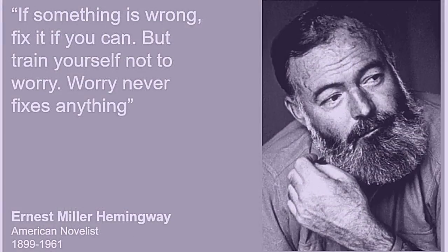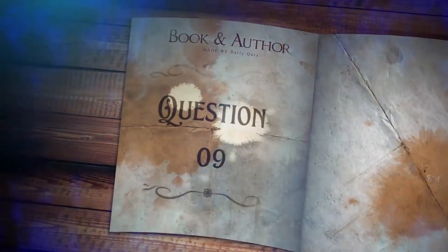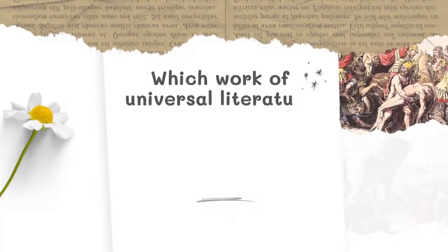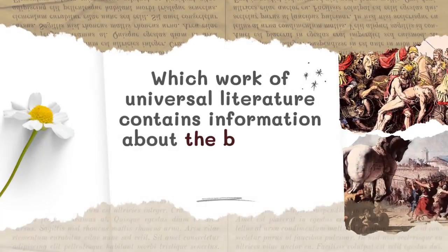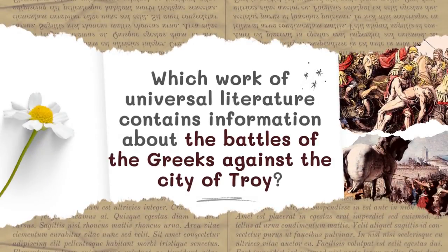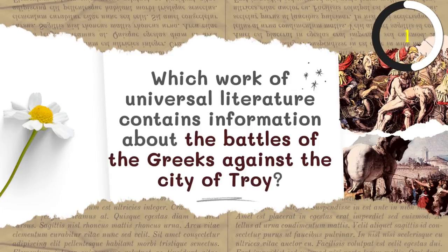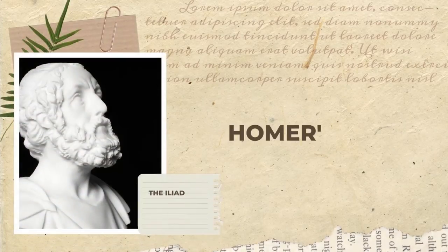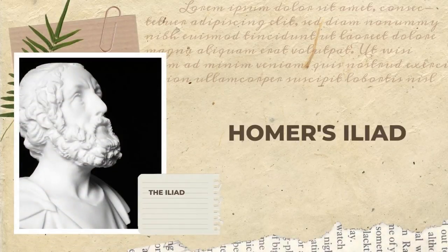He committed suicide on July 2nd, 1961, in Ketchum, Idaho. Question number nine: which work of universal literature contains information about the battles of the Greeks against the city of Troy? The answer is Homer's Iliad.